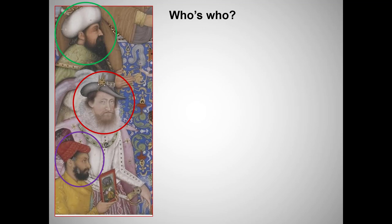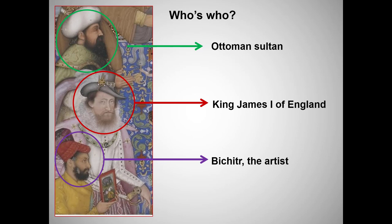On the left we see two kings that seem to have a lower rank than the sheikh. Who are they? The fellow on top is an Ottoman Sultan. Mughals and Ottomans were vying for dominance of the Islamic world at this time, and this painting makes it pretty clear that the Mughals see themselves as on top. Notice how deferentially the Ottoman ruler is approaching the king.